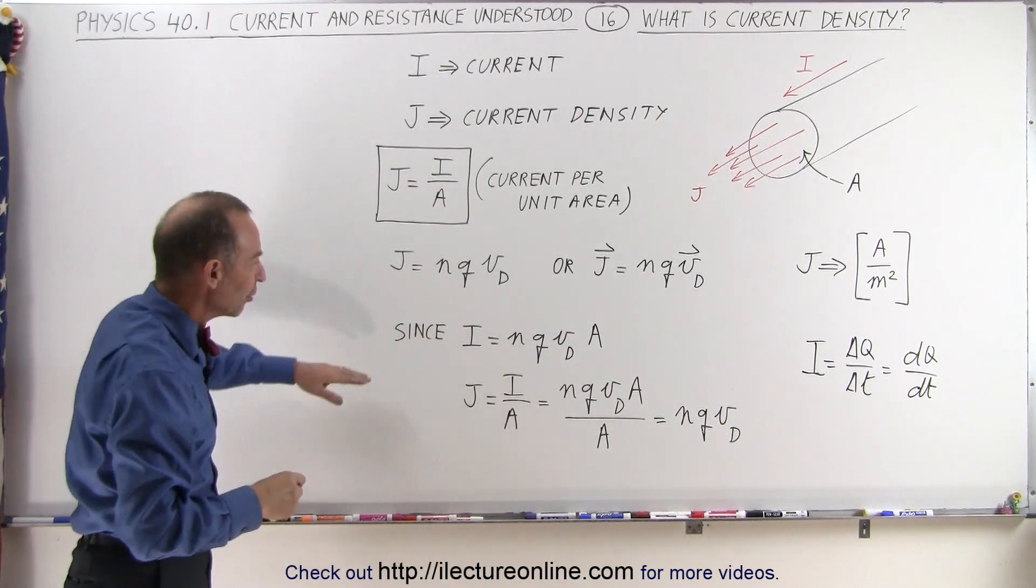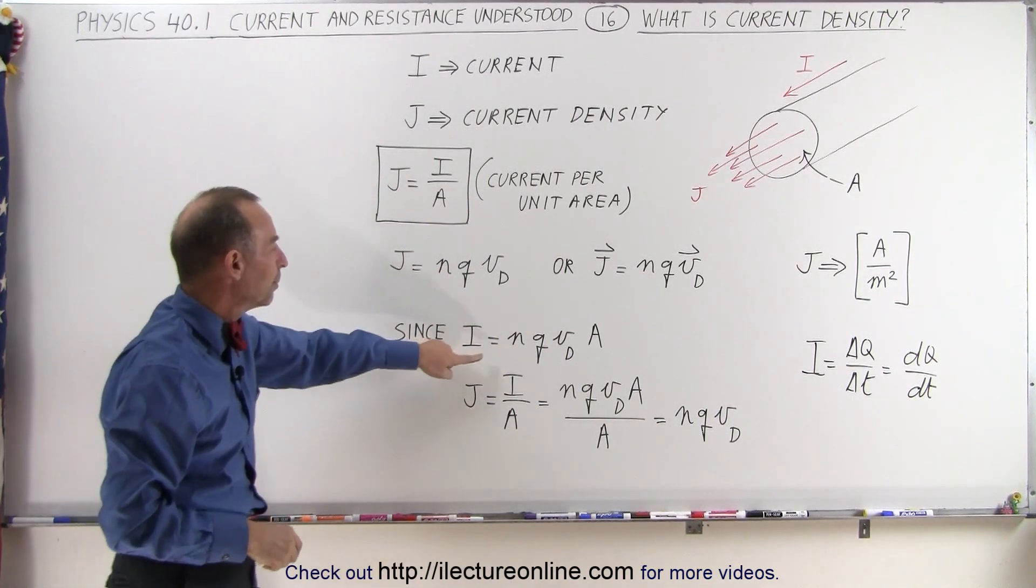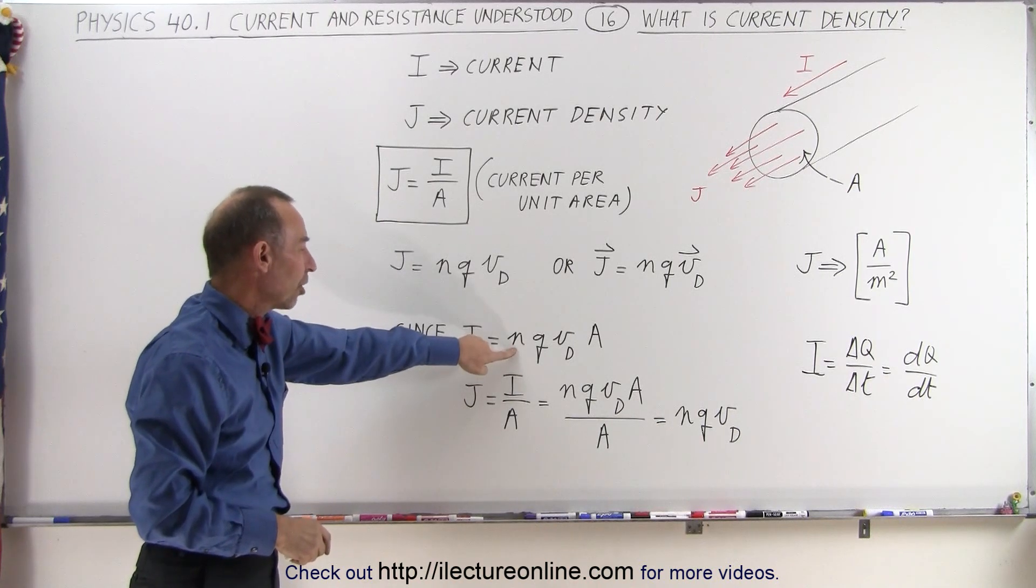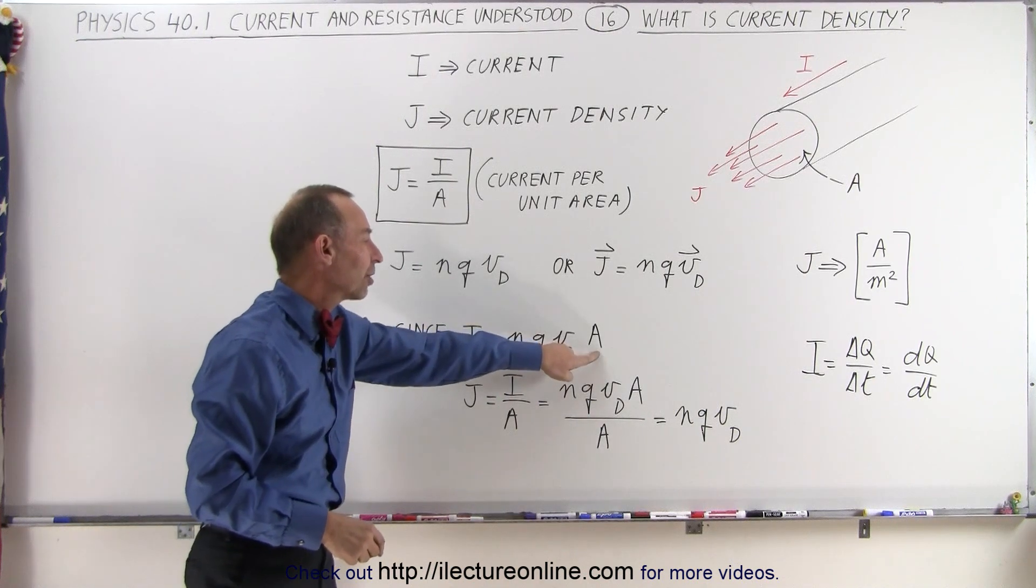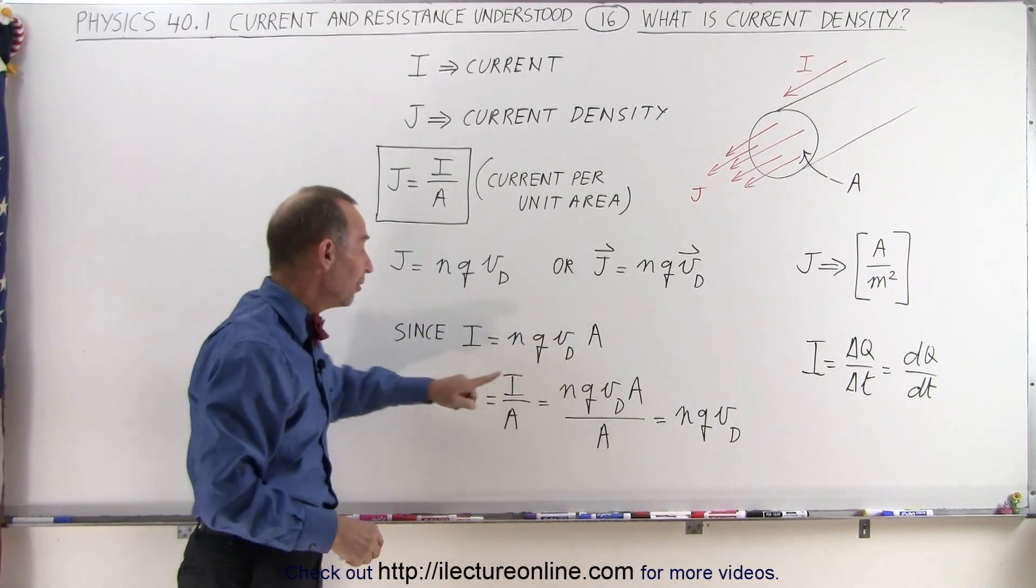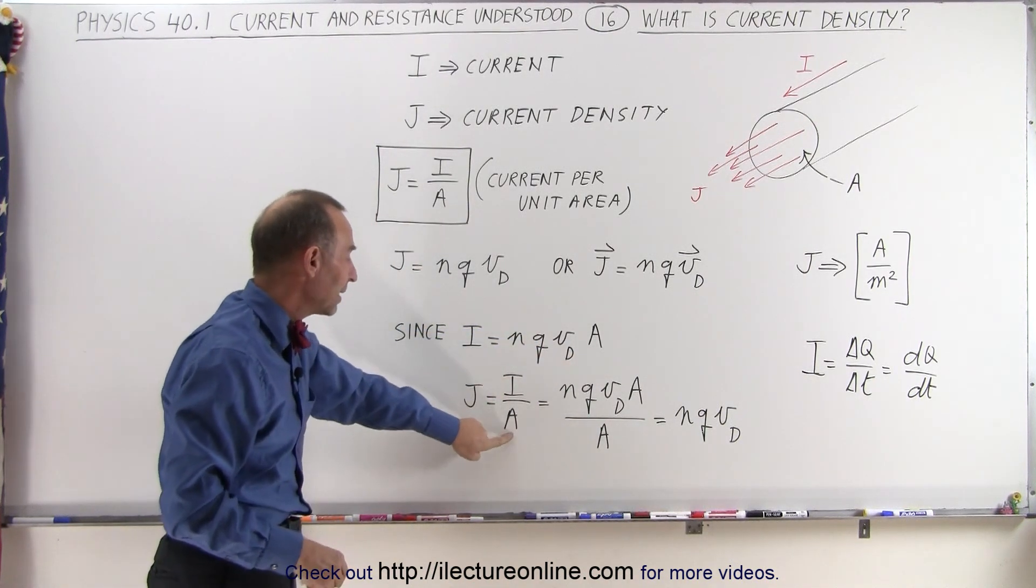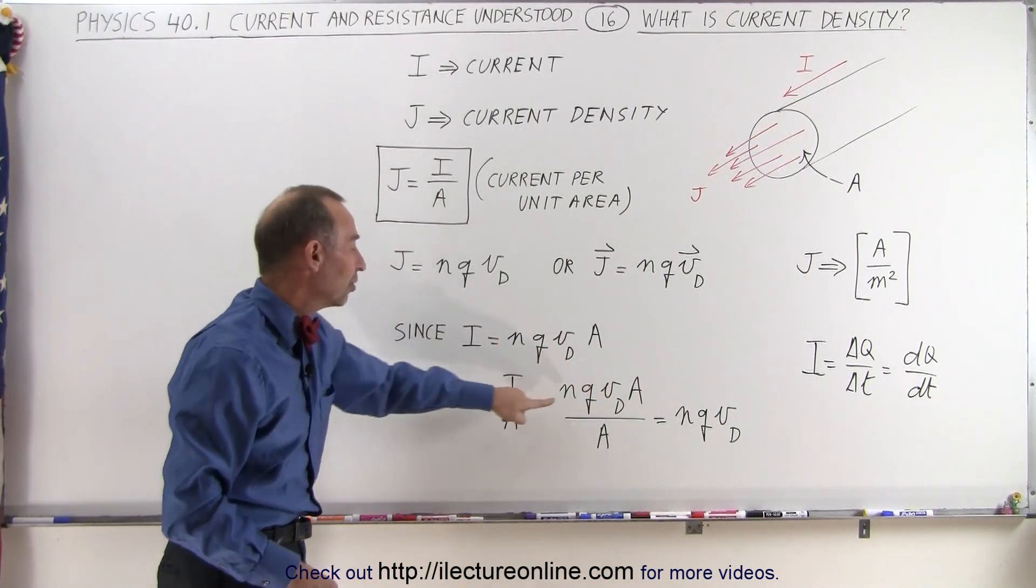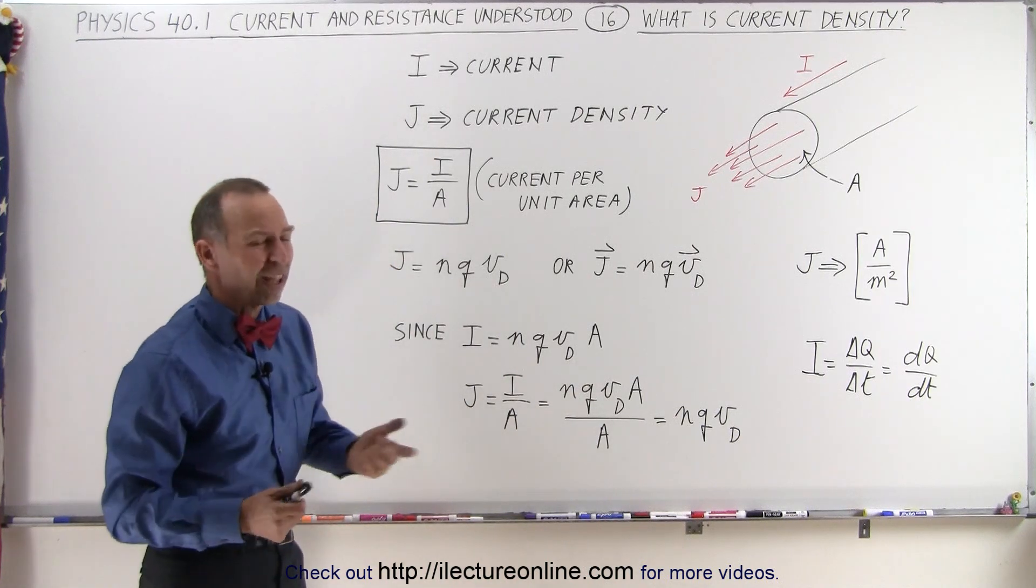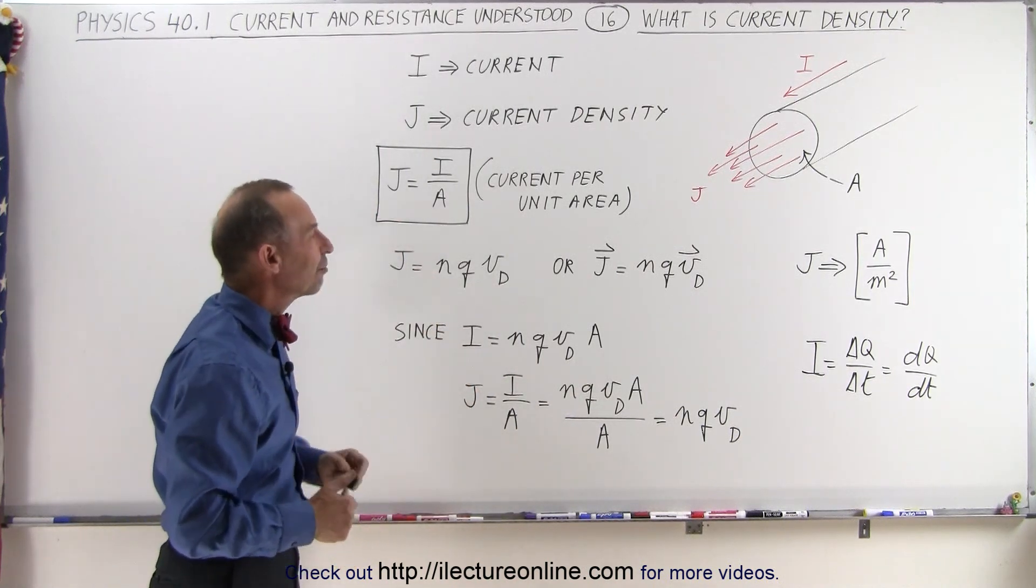If you remember from a few videos ago that the current can be defined as N, the number of charge carriers, times Q, the charge in each charge carrier, times the drift velocity, times the cross-sectional area. If we then take the current and divide it by the area, the A's cancel out, and that's where you have the current density is equal to NQ times the drift velocity. So that's where this equation came from.